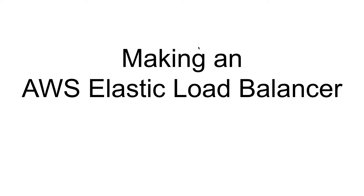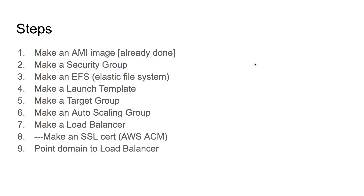I'm going to show you how to make an AWS Elastic Load Balancer. I've just made a couple of these today and had to teach myself how to do it. The steps are: you need to have an AMI (Amazon Machine Image), which we already have, then you'll need to make a security group because there's going to be a lot of networking in and around our load balancer, so having a security group with all the settings in one place is quite good.